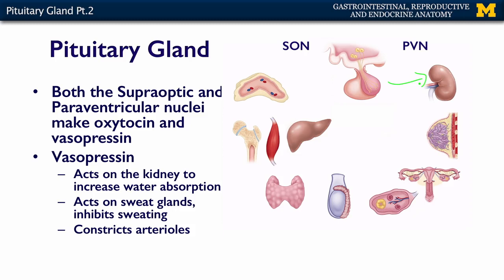In summary, oxytocin acts on the breast or mammary gland and the uterus, while vasopressin or anti-diuretic hormone acts on the kidney. Both hormones are made in the supraoptic nucleus and the paraventricular nucleus, and both are released into the posterior pituitary capillary beds. In the next section, we'll talk about the anterior pituitary, how the hypothalamus regulates it, and how the anterior pituitary regulates the rest of the endocrine system.